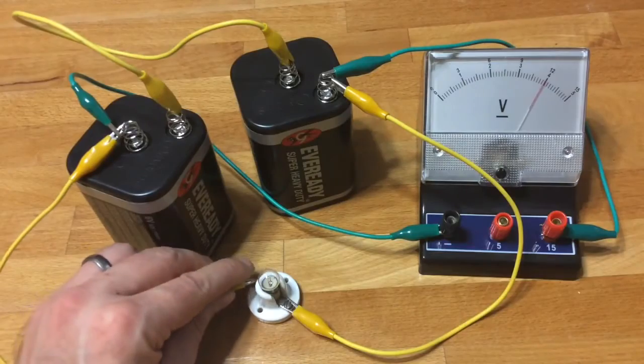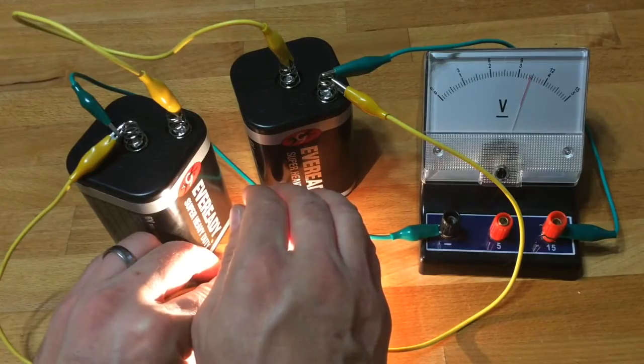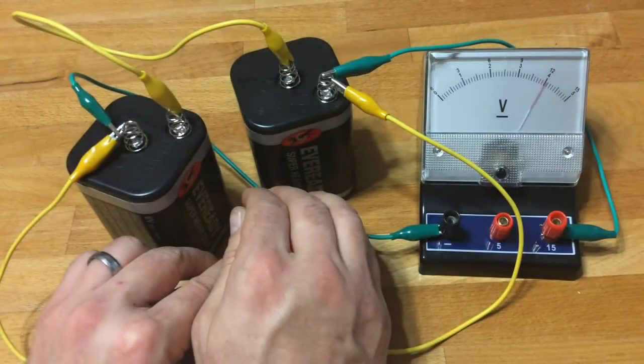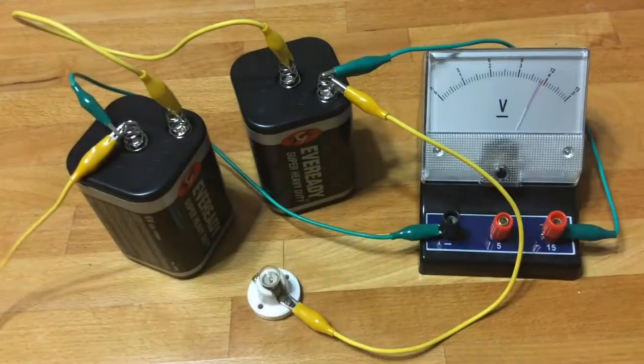So more voltage means more energy per coulomb and more current flowing through this thing and so it is a lot brighter. And because there's more current flowing there is more voltage drop inside that battery.